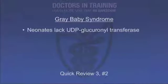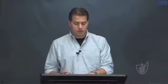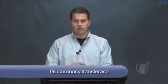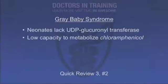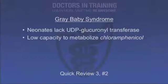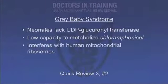Question 2: Why does gray baby syndrome occur in neonates? Neonates, particularly premature infants, lack the liver enzyme UDP-glucuronosyltransferase, which metabolizes both bilirubin and other compounds like chloramphenicol. With deficiency of this enzyme, there is low capacity to metabolize chloramphenicol, causing drug accumulation. The drug then interferes with the function of human mitochondrial ribosomes, leading to the syndrome.